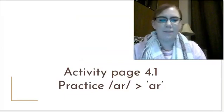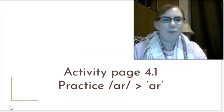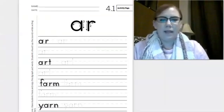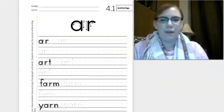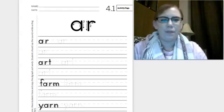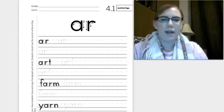Next, let's go to activity page 4.1 in our workbook. So practice writing and reading the sound R. Let's start off by reading the words and then you can write them on your own. First, we have R. Repeat after me. R. Art, farm, yarn.